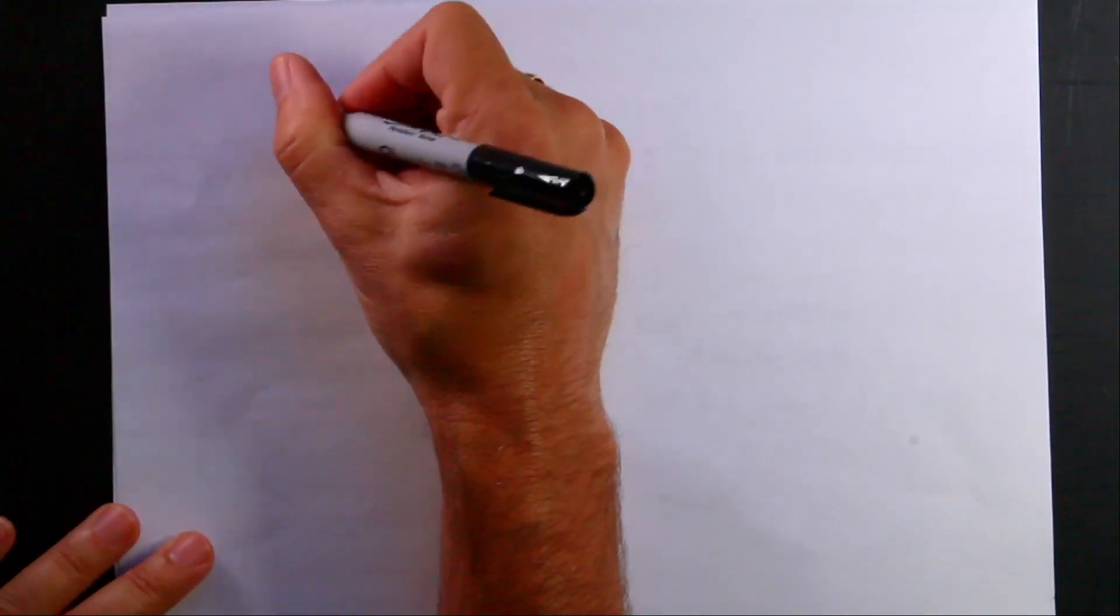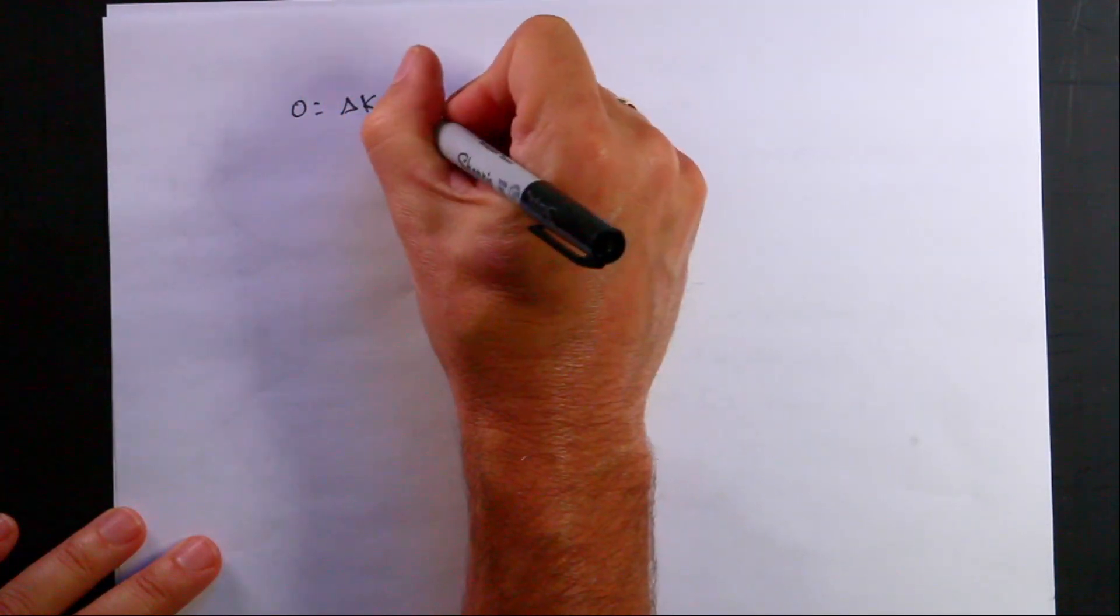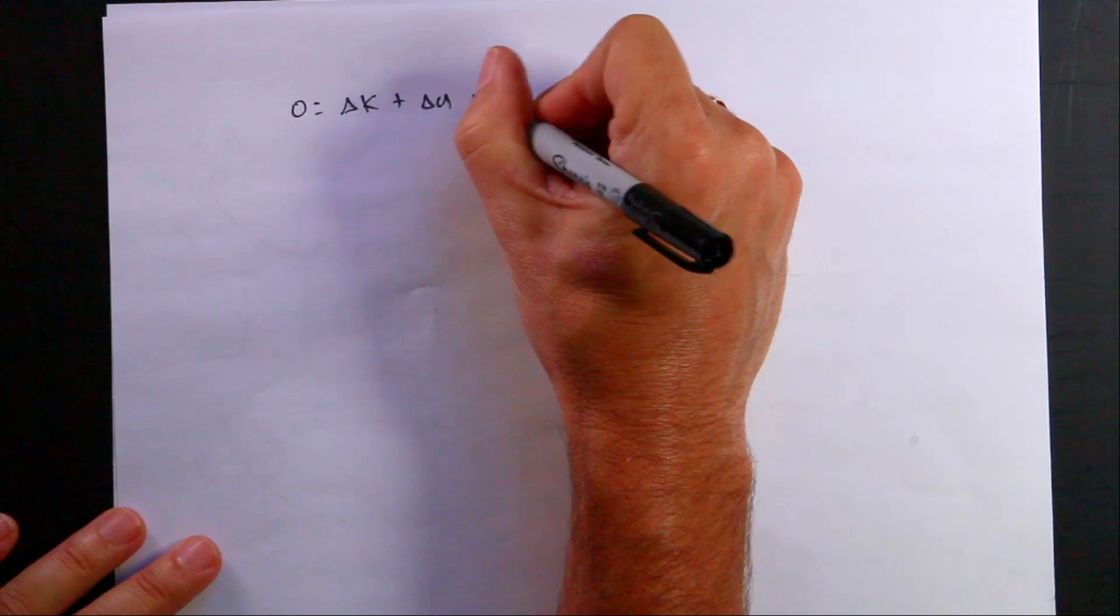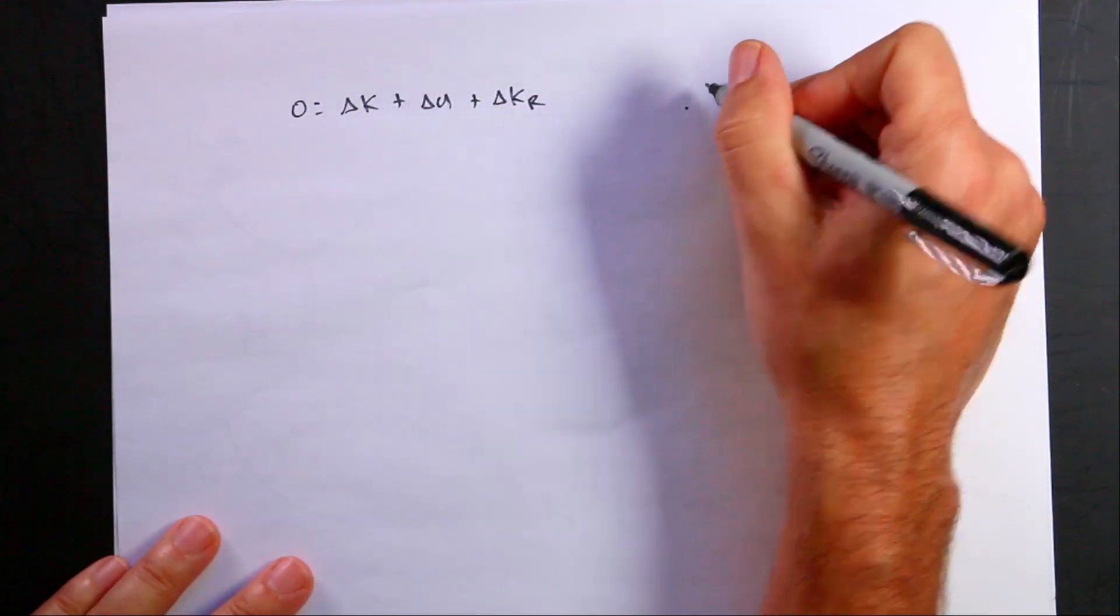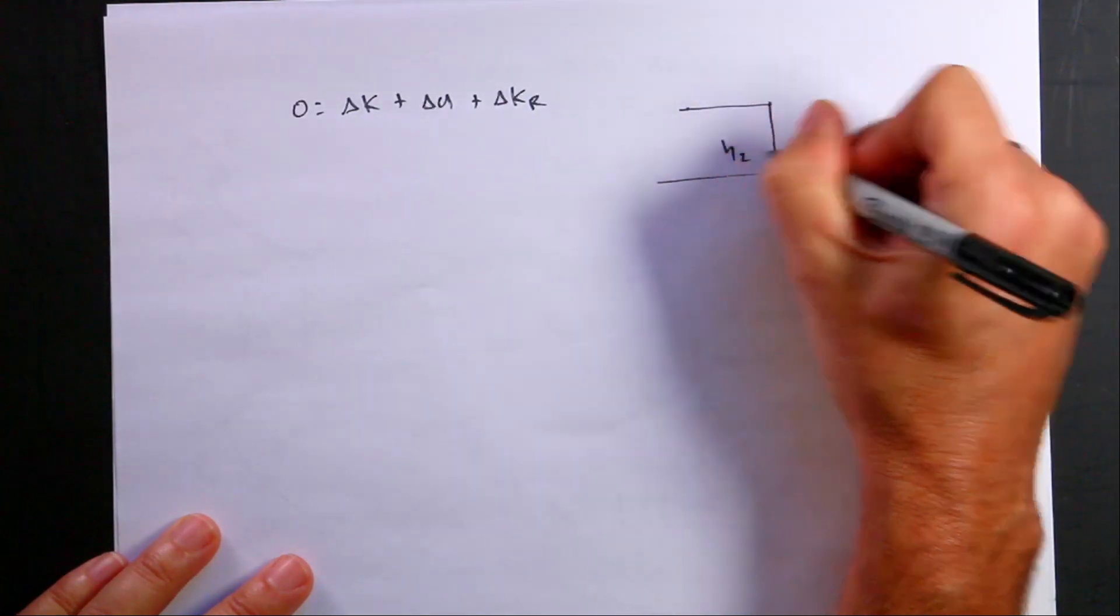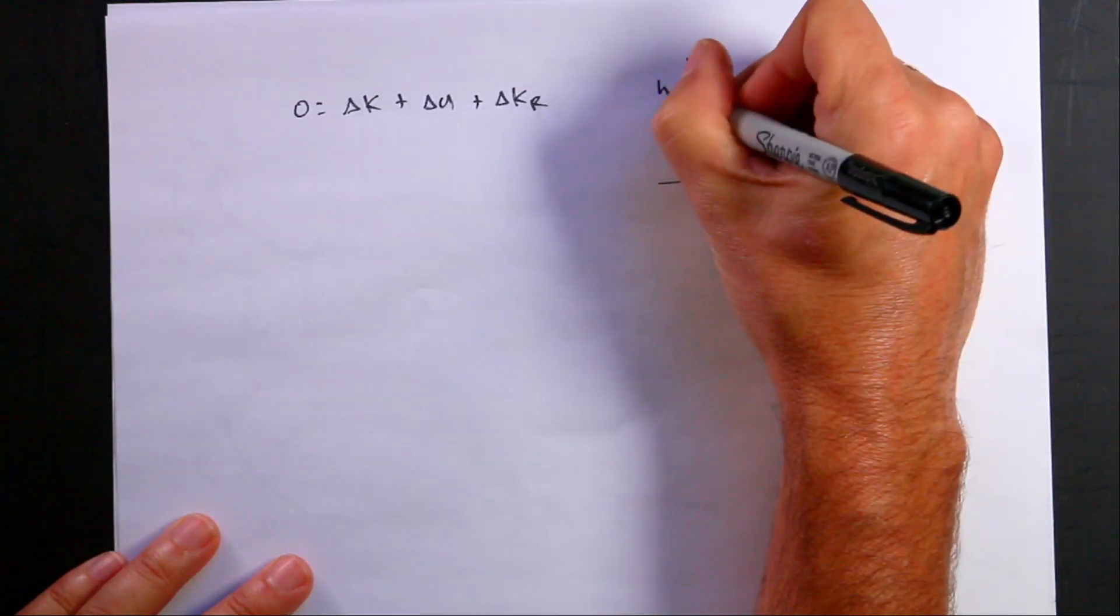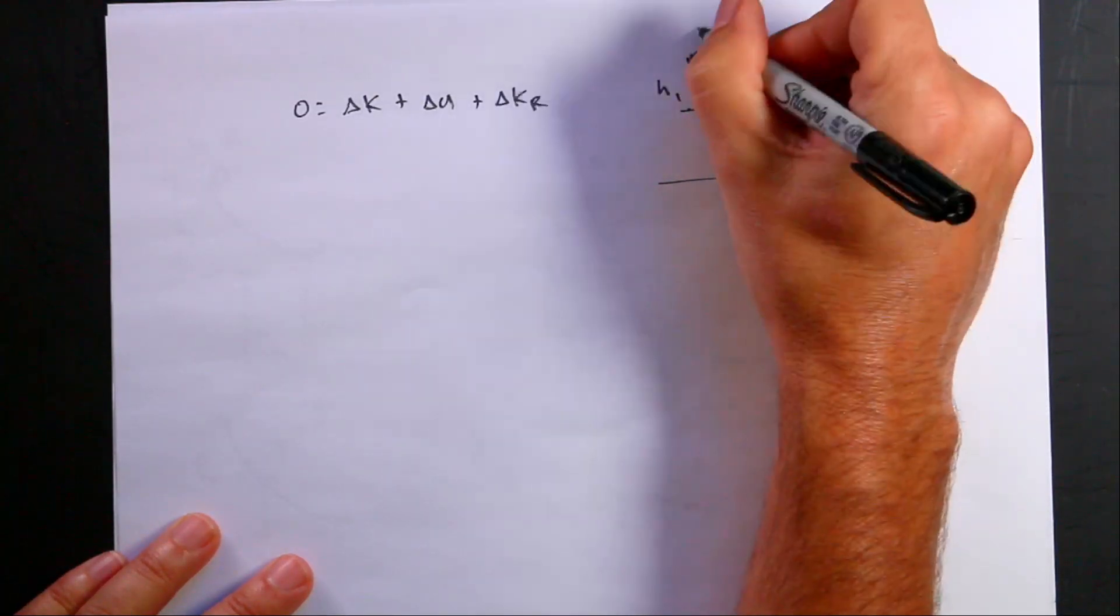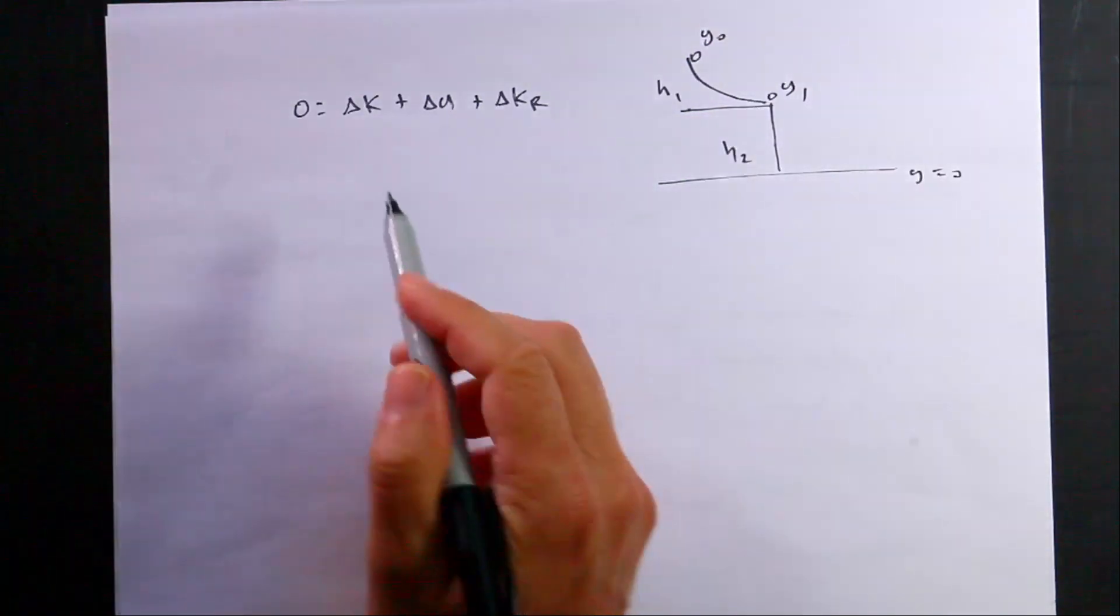Okay, so let's put this together for the work energy principle. There's no work done, so I have zero equals delta K plus delta U plus delta Kr. And in my problem, just like before, I'm going to use this as y equals zero. So this is point zero, this is point one, and I'm going to go from zero to one.